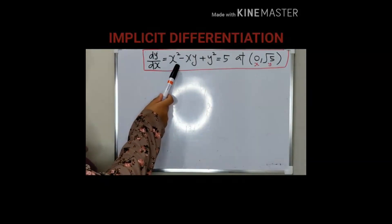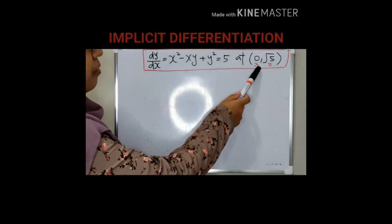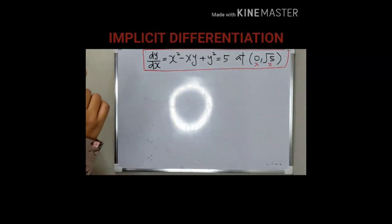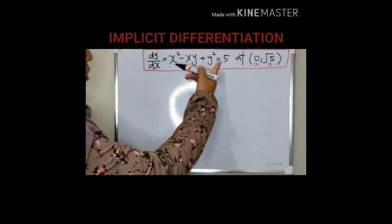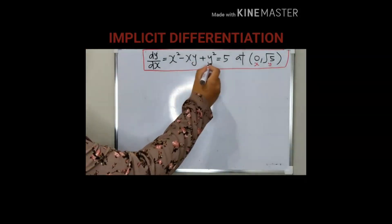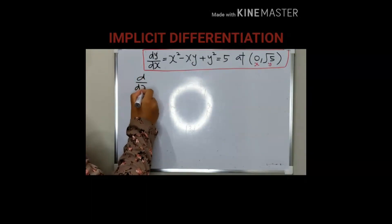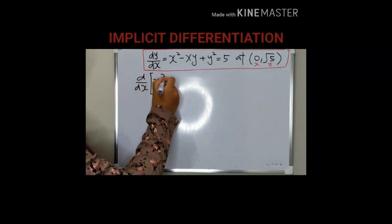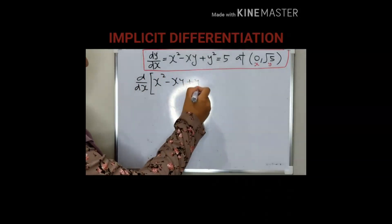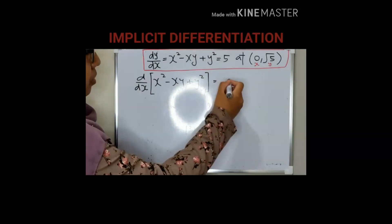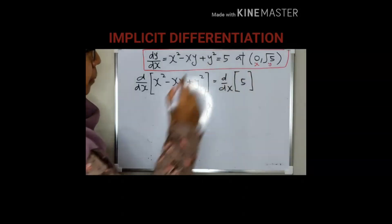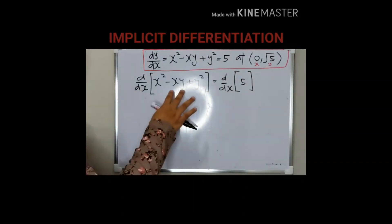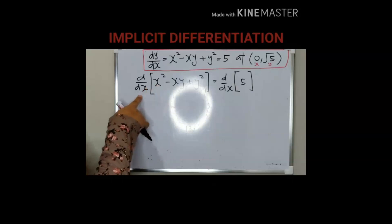Now we look at this example — implicit differentiation again, but with given values of x and y, so the final answer must be a single value. We differentiate both sides with respect to x. Differentiating x squared gives 2x. For the term xy, apply the product rule: minus (1 times y plus x times dy/dx).